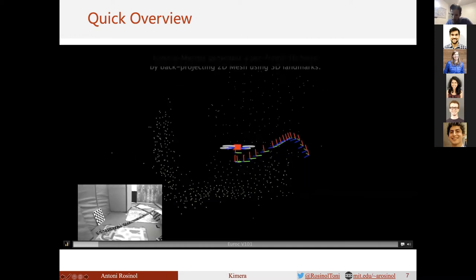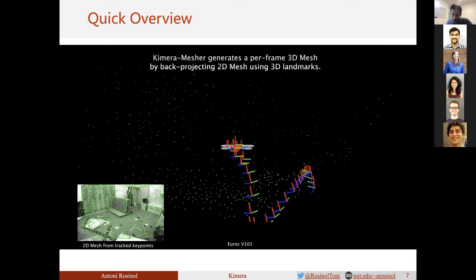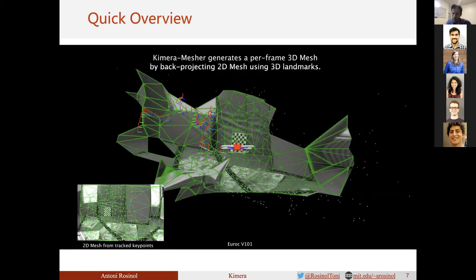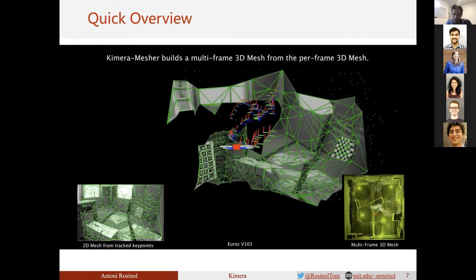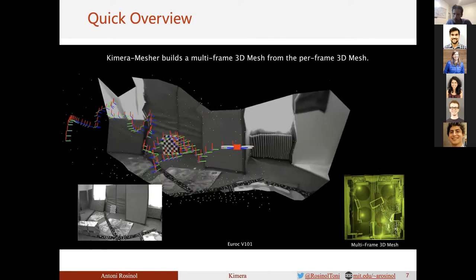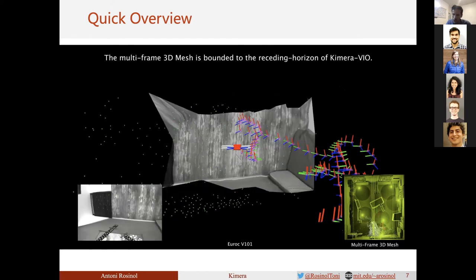Hence, we also estimate the 3D geometry by triangulating tracked keypoints in the 2D image, visible at the bottom left, and projecting the resulting 2D mesh into 3D. This mesh only occupies the immediate field of view of the drone. Therefore, we build a multi-frame 3D mesh that covers the area surrounding the drone, as shown at the bottom right.